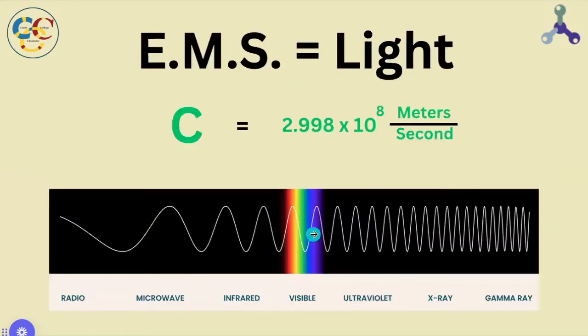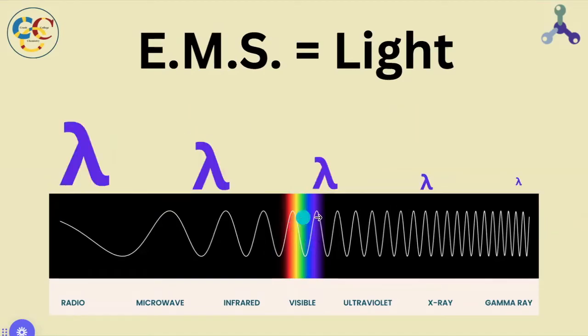If electromagnetic spectrum is light going at a constant speed, then what the heck is all this variability down here? What's directly being visualized in this EMS diagram is the wavelength, the horizontal size of the wave. It's really big for radio waves, and it's really small for gamma radiation.